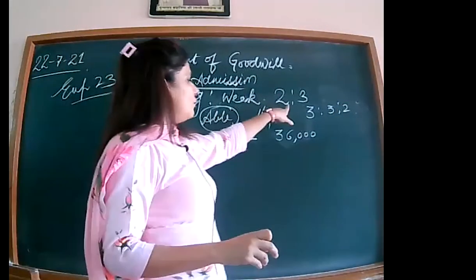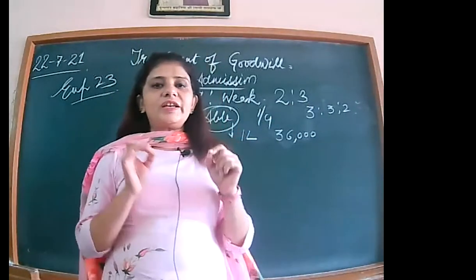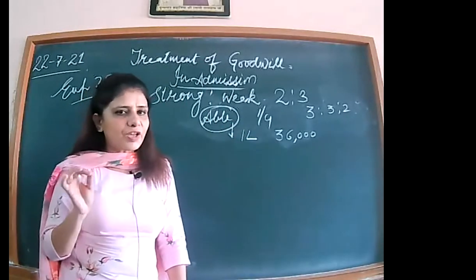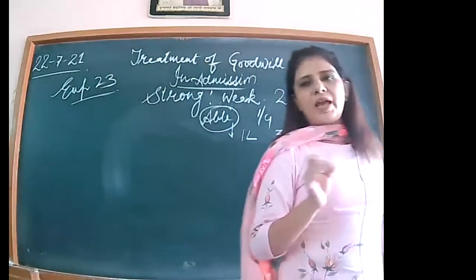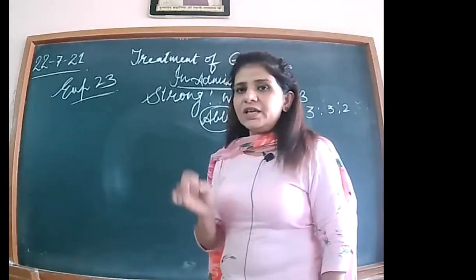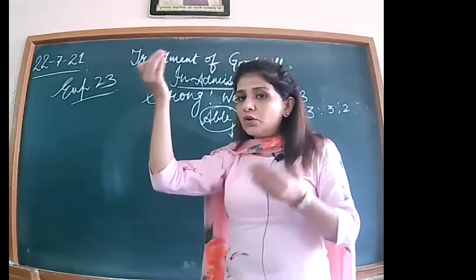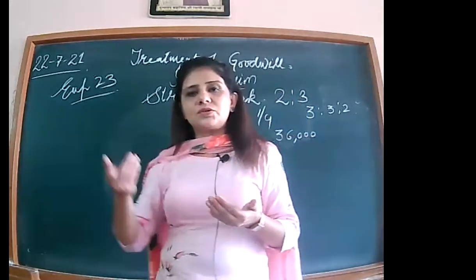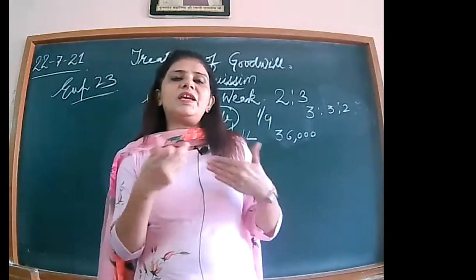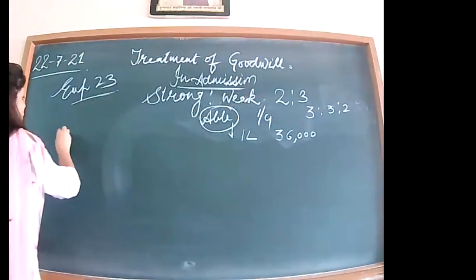We have the old ratio and we have the new ratio — can't we calculate the sacrificing ratio? It is always the first step whenever the treatment of goodwill comes, whenever a question on admission comes involving new sharing and old sharing. It is your primary duty to calculate the sacrificing ratio, because we need it to pass the journal entry for distributing goodwill at the time of admission between the sacrificing partners.